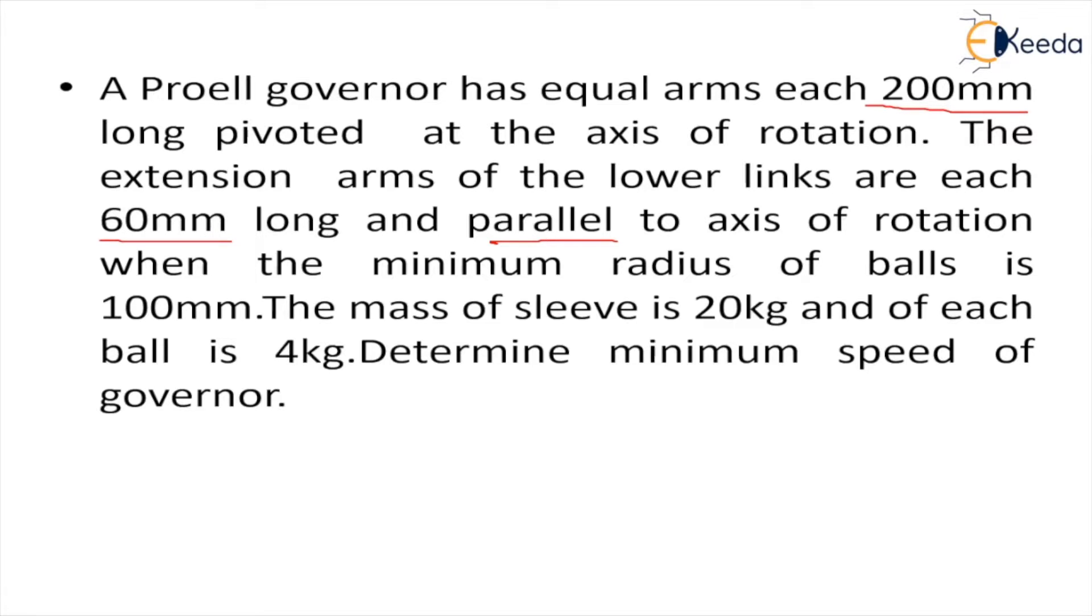When the minimum radius of balls R is given as 100 mm, the mass of sleeve M is 20 kg and of each ball is 4 kg. We have to determine the minimum speed of governor.